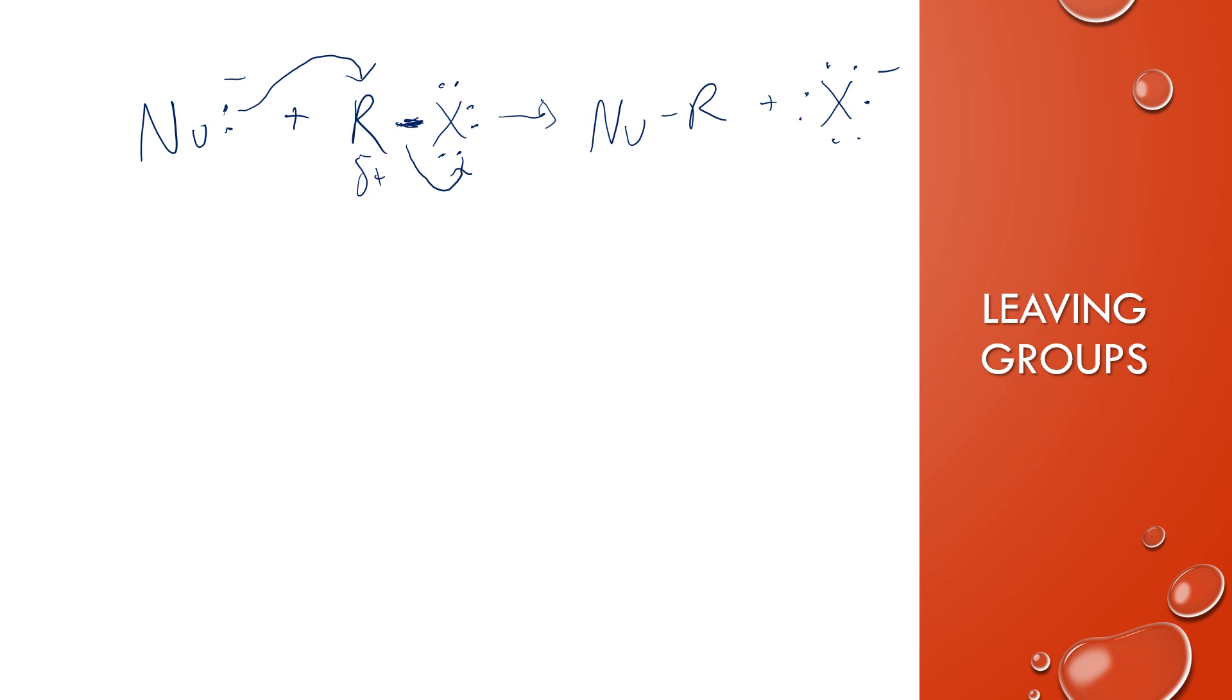Now, halogens make really good leaving groups because they have weaker bonds to carbon. And you can check this using your data booklet. So section 12 in your data booklet has bond enthalpies. Now, if you don't remember, bond enthalpies is the energy or heat energy that is required to break bonds. So the greater the bond enthalpy, the stronger the bond, the more energy it takes. So lower bond enthalpies are better leaving groups.